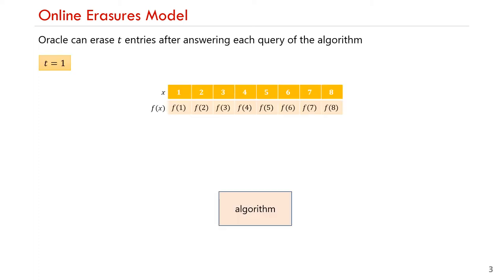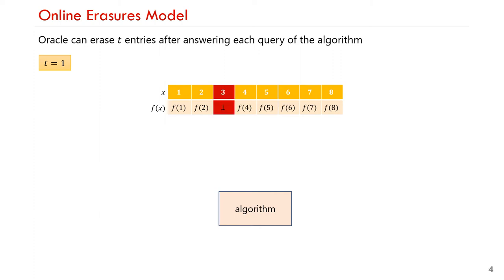I'll demonstrate the model for the case when t equals 1. Before the algorithm makes any queries, all entries of the function are non-erased. Suppose the algorithm's first query is entry 2. The oracle first has to answer this query by returning f(2). After answering the query, the oracle can erase one entry. Suppose it chooses to erase entry 3; then the value f(3) will be hidden from the algorithm for the remainder of its running time. If at some point the algorithm queries entry 3, it will receive a special symbol ⊥. This process is then repeated for all queries of the algorithm.